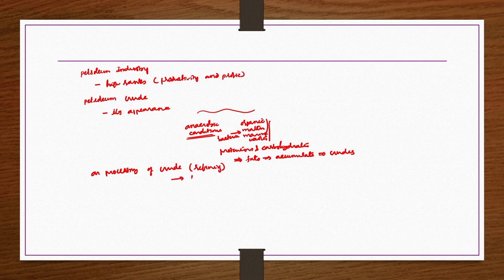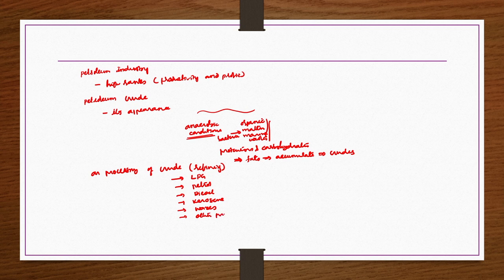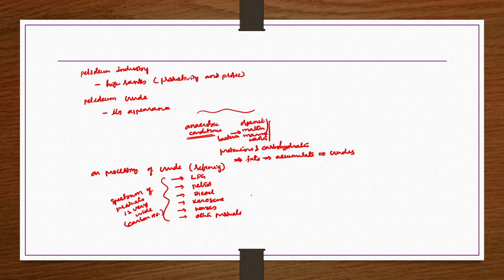From the refining process, we may get LPG, petrol spirits, diesel, kerosene, waxes, and several other products. The spectrum of products is very wide, especially in terms of carbon number. The components in crude range from C1 to C40 and even higher. LPG contains C3 and C4, petrol contains C5 to C17, and diesel also falls in the C5 to C17 range.